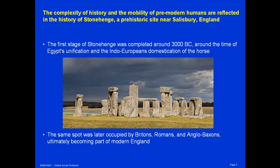The complexity of history and the mobility of premodern humans are reflected very well in the history of Stonehenge, a prehistoric site that long predates the Celts and the Druids in Salisbury, England. This same spot where prehistoric people built this astronomical calendar was later occupied by the Celtic Britons, then the Romans, the Anglo-Saxons, ultimately becoming modern England. Throughout all this time, the site remained while the societies around it changed.